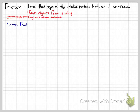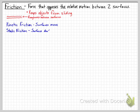Now we have kinetic friction and we have static friction. Kinetic friction is when the surfaces are moving — so you're trying to move a box across the floor, and there is kinetic friction. It's the friction of motion. And then there's static friction, where surfaces are not moving, so it's stationary or static.